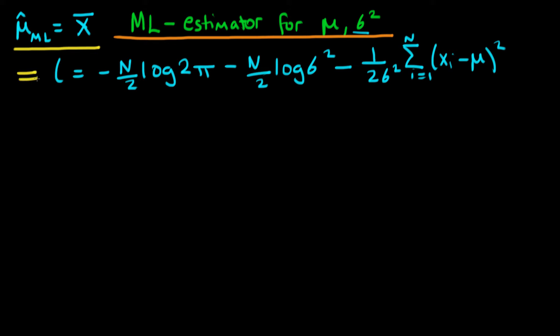We've got our log likelihood, which we derived at the start of the last video. Now what we're doing is we're trying to estimate the population variance sigma squared. So how do we go about doing that?